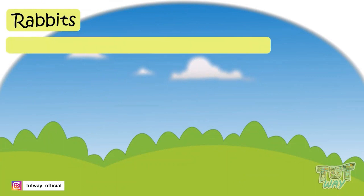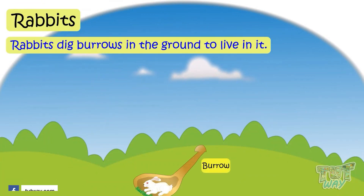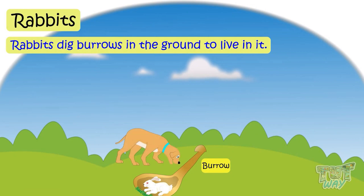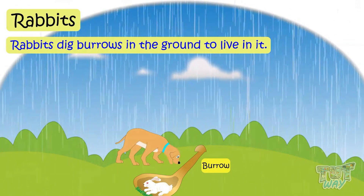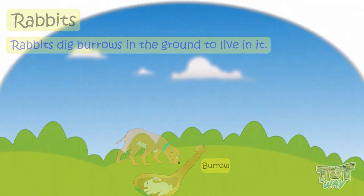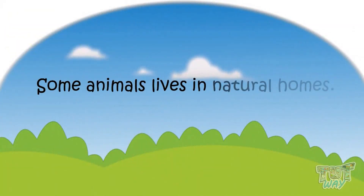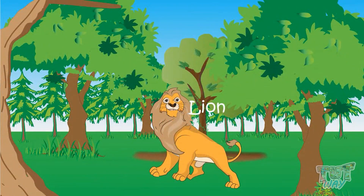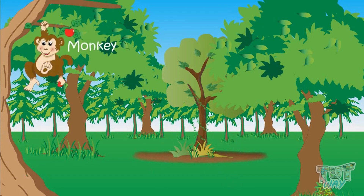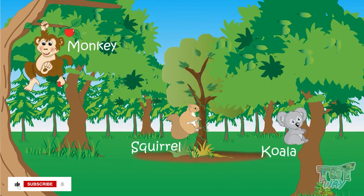Rabbits dig burrows in the ground to live in — it saves them from enemies and bad weather. Some animals live in natural homes. Lions live in forests. Monkeys, squirrels, and koalas live on trees.